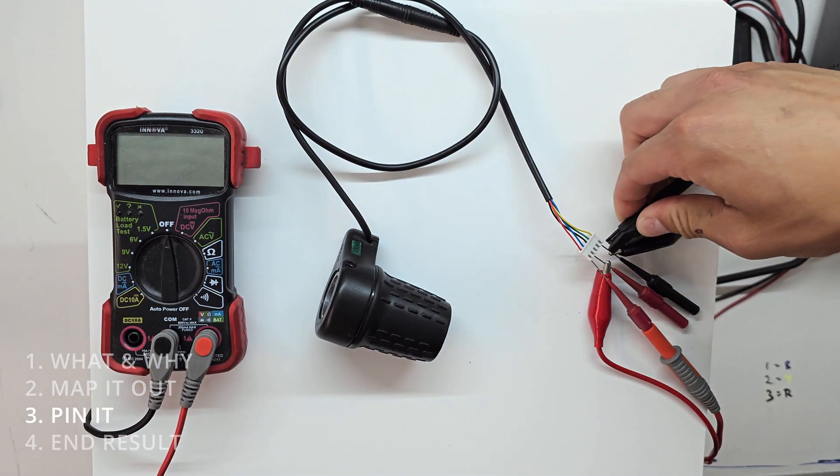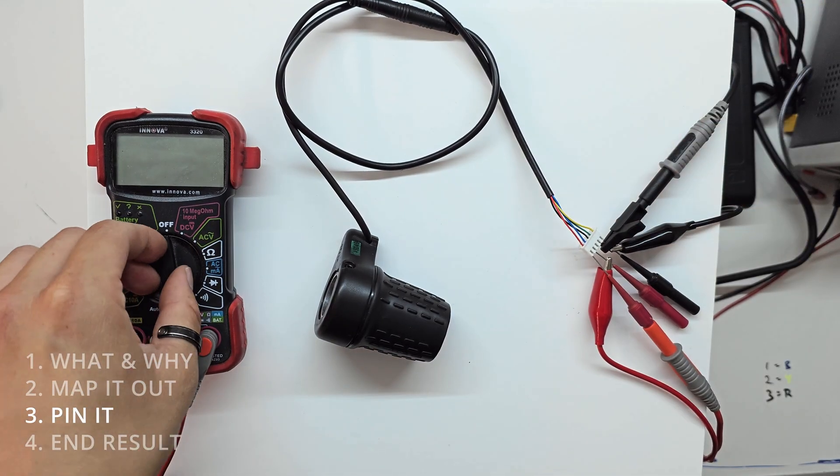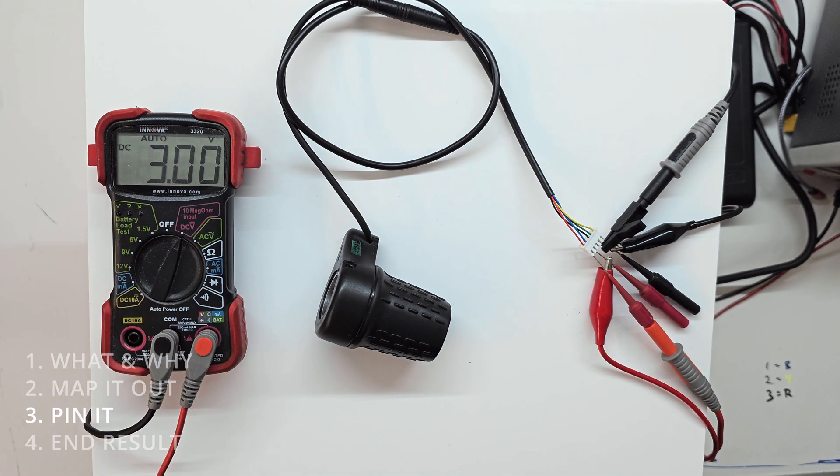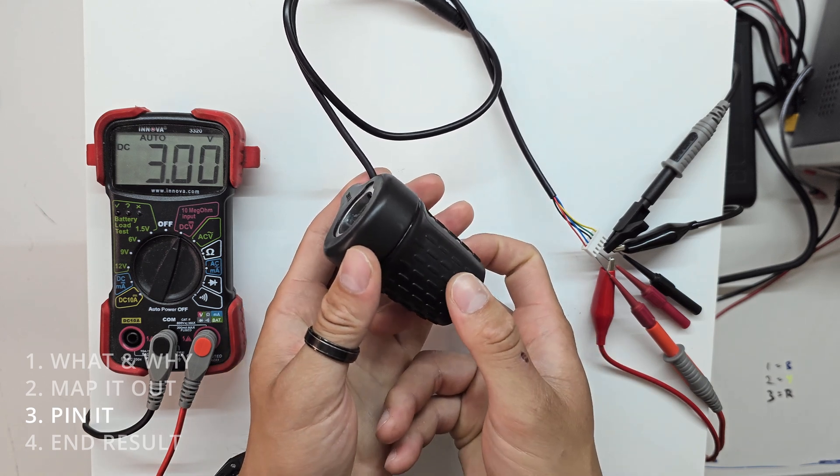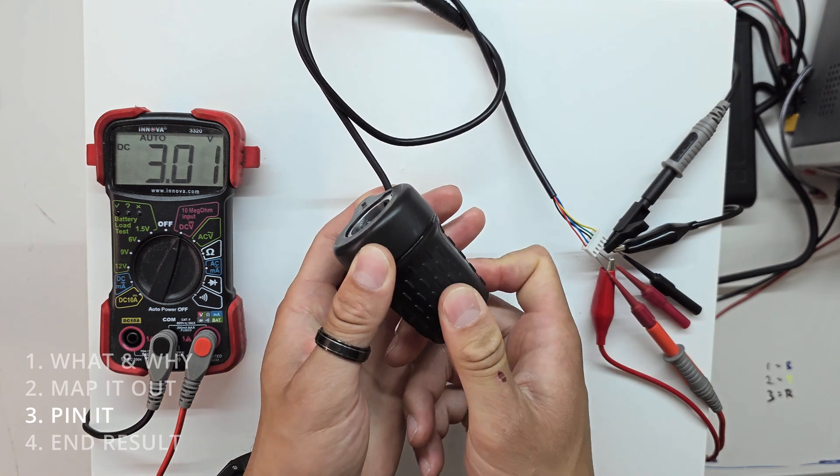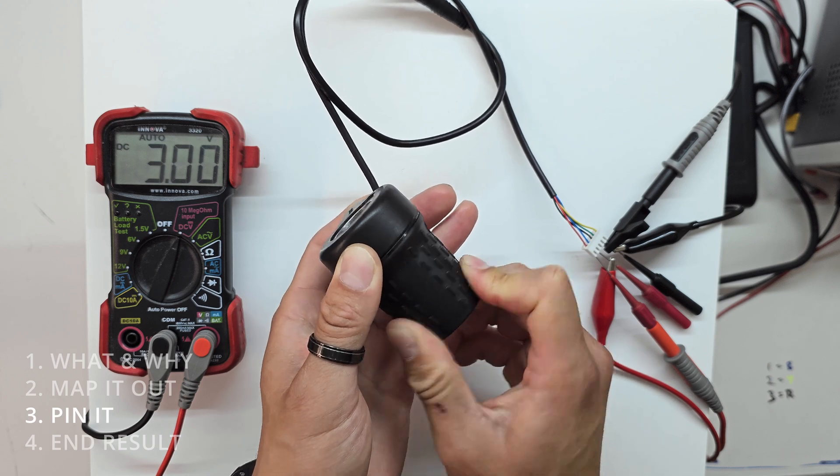Connect our multimeter to common ground. And what we hope to see is when we turn this throttle, we go between zero and five volts. And when we do that, nothing's happening.